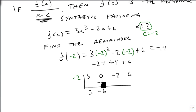This is minus 6. 0 plus minus 6 is minus 6. Minus 6 times minus 2 is 12. Minus 2 times 12, or plus 12, is 10. Minus 2 times 10 is minus 20, and 6 minus 20 is minus 14.